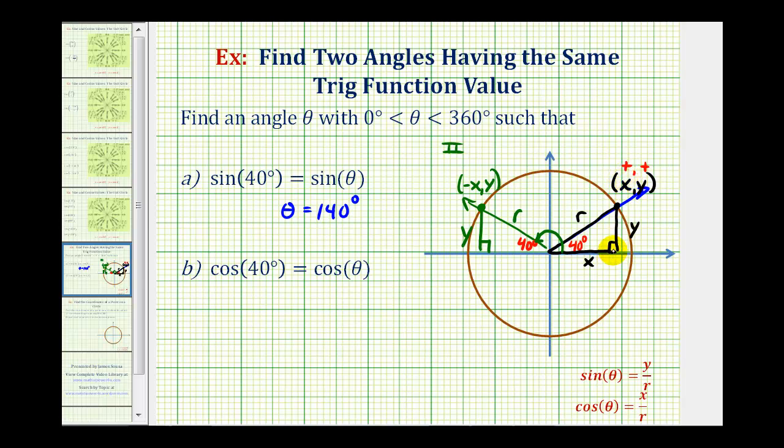We'll notice x is positive in the fourth quadrant as well. So if we have an angle that has a terminal side in the fourth quadrant and a reference angle of 40 degrees, like this angle here, it would have the same cosine function value. Here's the reference triangle.